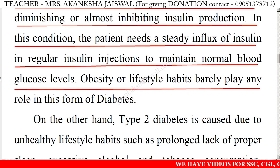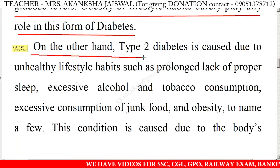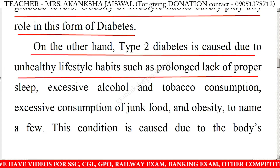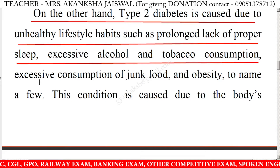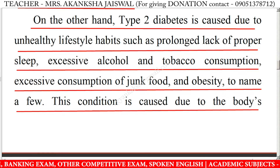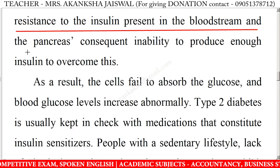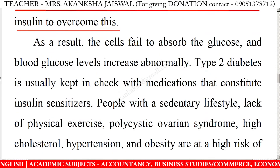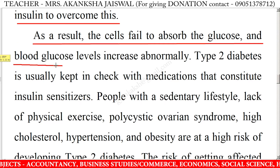Obesity or lifestyle habits barely play any role in this form of diabetes. On the other hand, type 2 diabetes is caused due to unhealthy lifestyle habits such as prolonged lack of proper sleep, excessive alcohol and tobacco consumption, excessive consumption of junk food and obesity. This condition is caused due to the body's resistance to the insulin present in the bloodstream and the pancreas' consequent inability to produce enough insulin to overcome this. As a result, the cells fail to absorb the glucose and blood glucose levels increase abnormally.